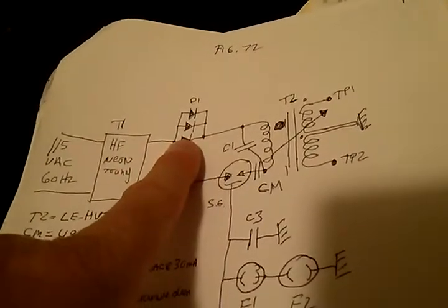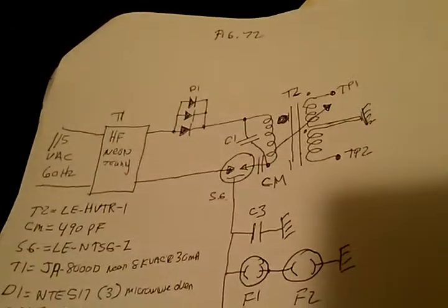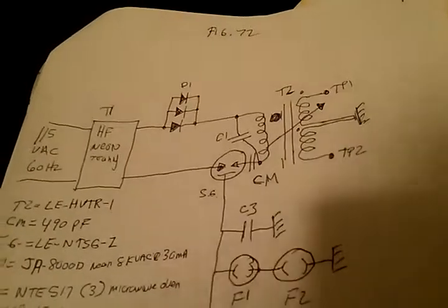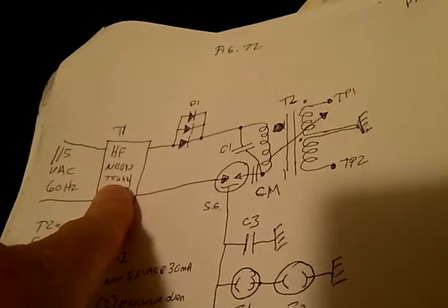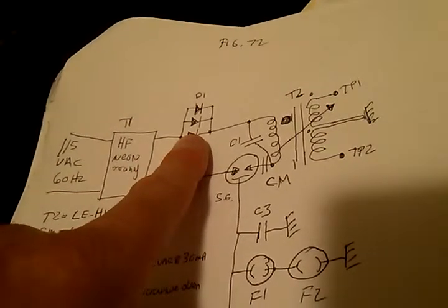It brings the impedance way up. It's about 600 kilohms that the neon sees with this diode alone.